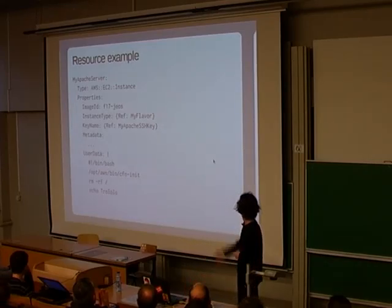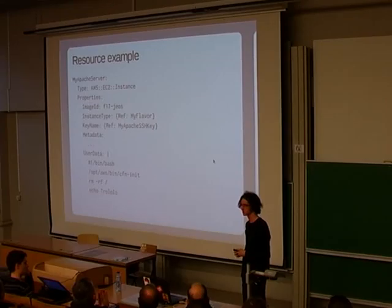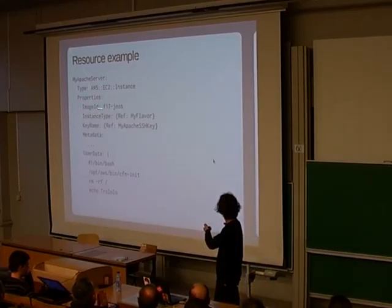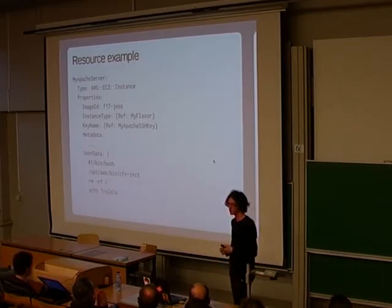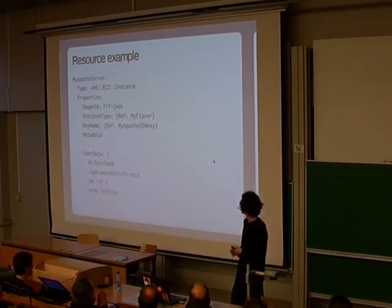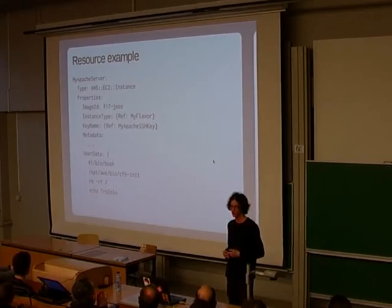Here's an example of a Nova instance resource. Each resource has a type — this is a remnant of CloudFormation format; we're going to change that a bit but still want to maintain backwards compatibility. You can specify metadata such as image ID, which is the name of the image you want to launch from, instance type which is essentially the Nova flavor, and the SSH key pair. You see here we're not using absolute values but references — the thing we're referencing is actually the parameter the user will pass when launching this.